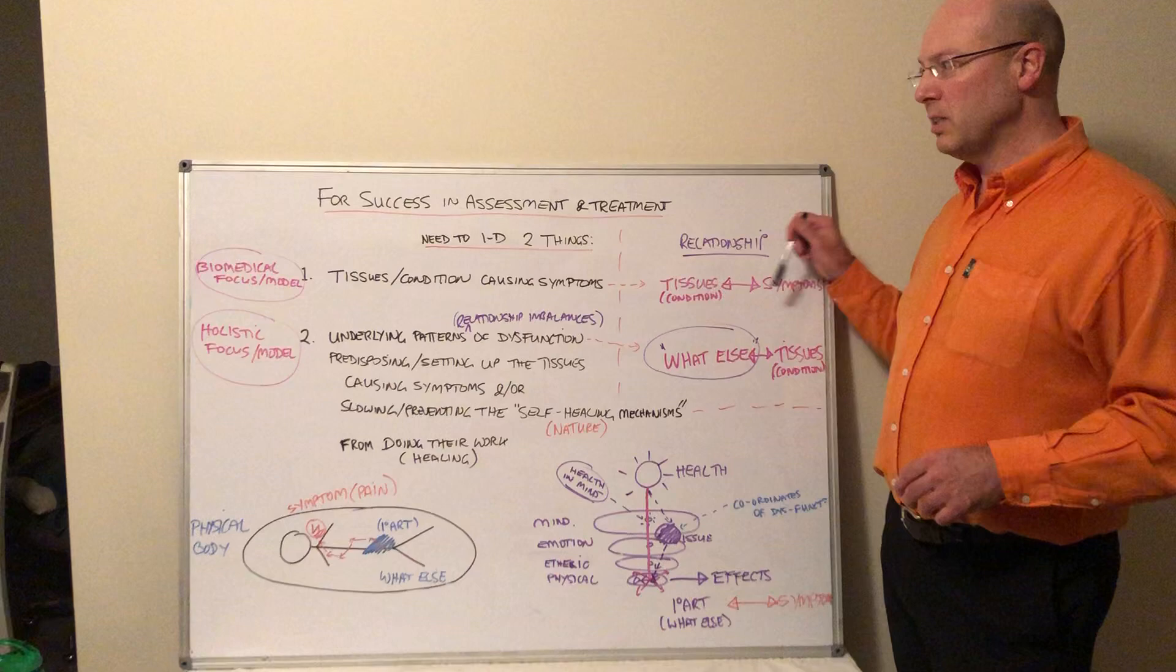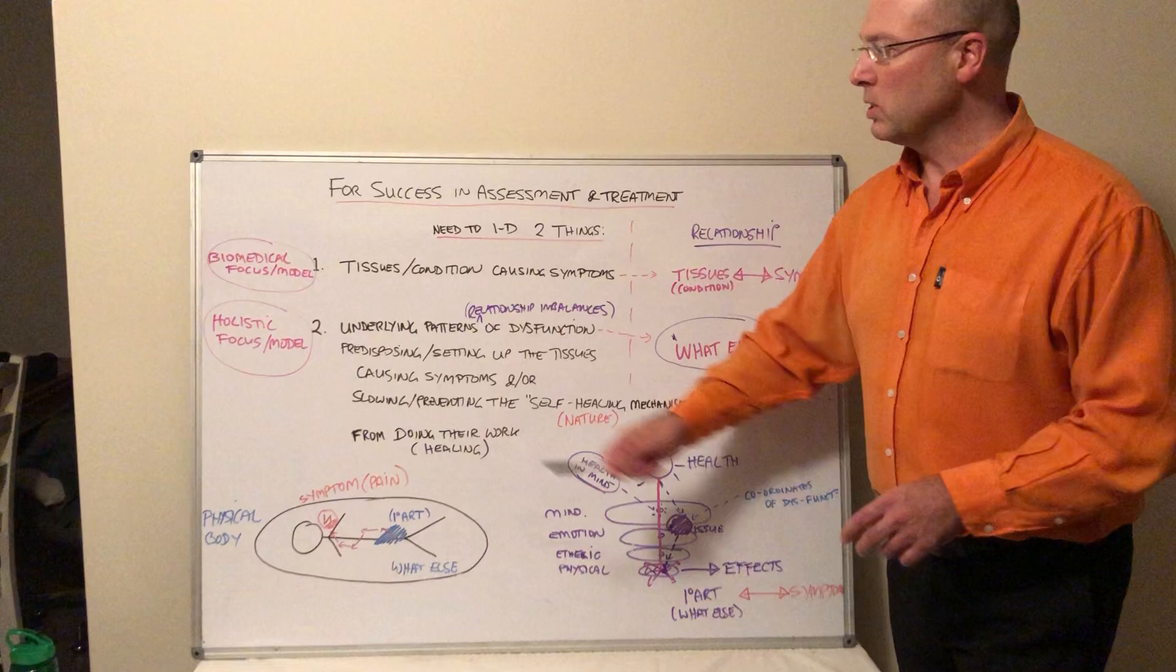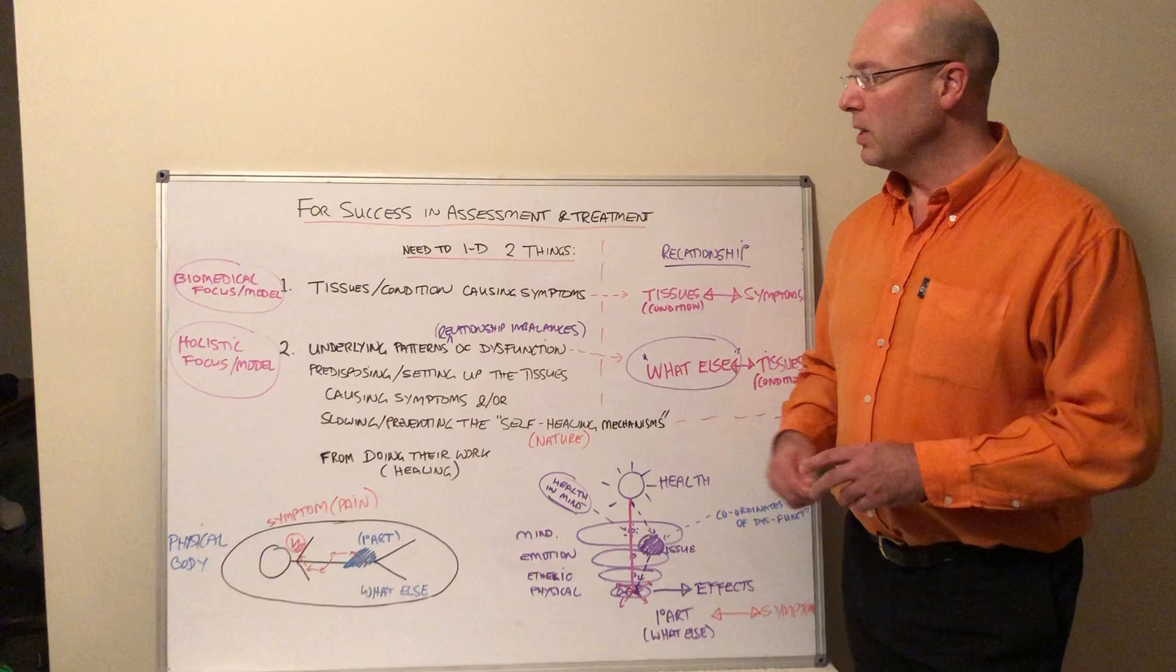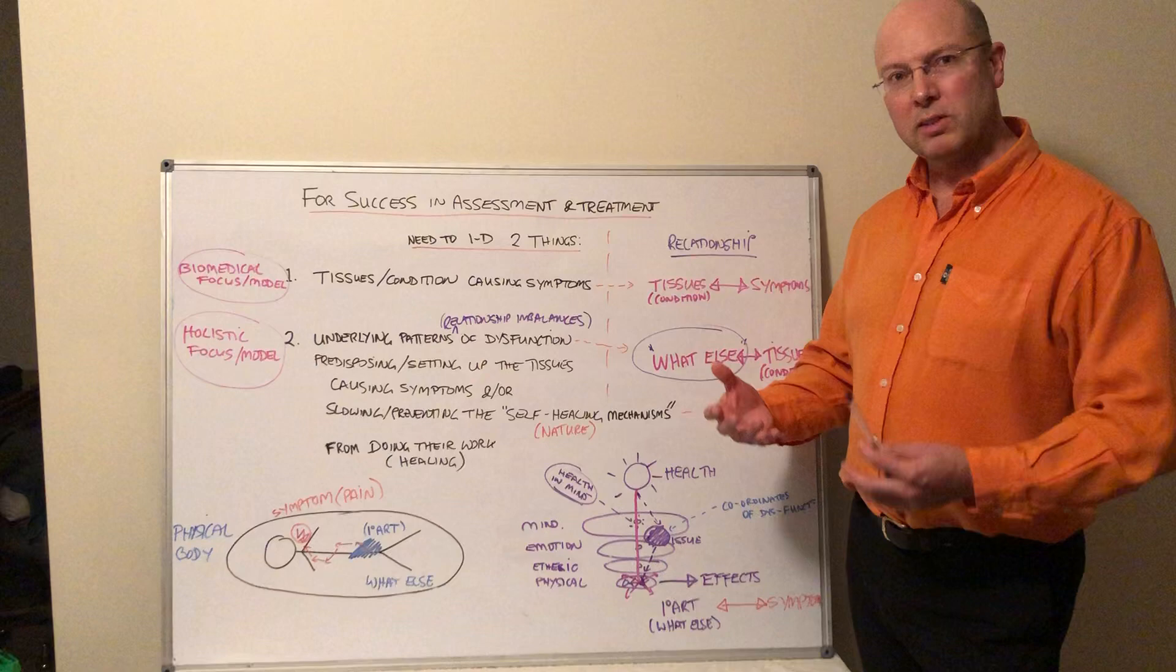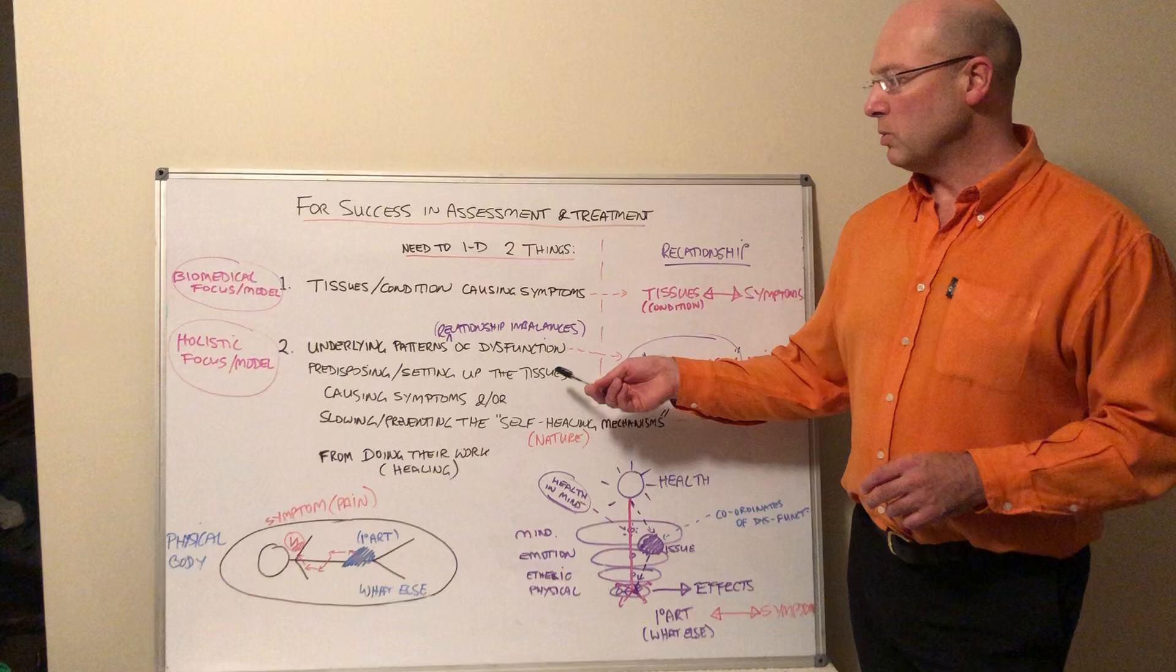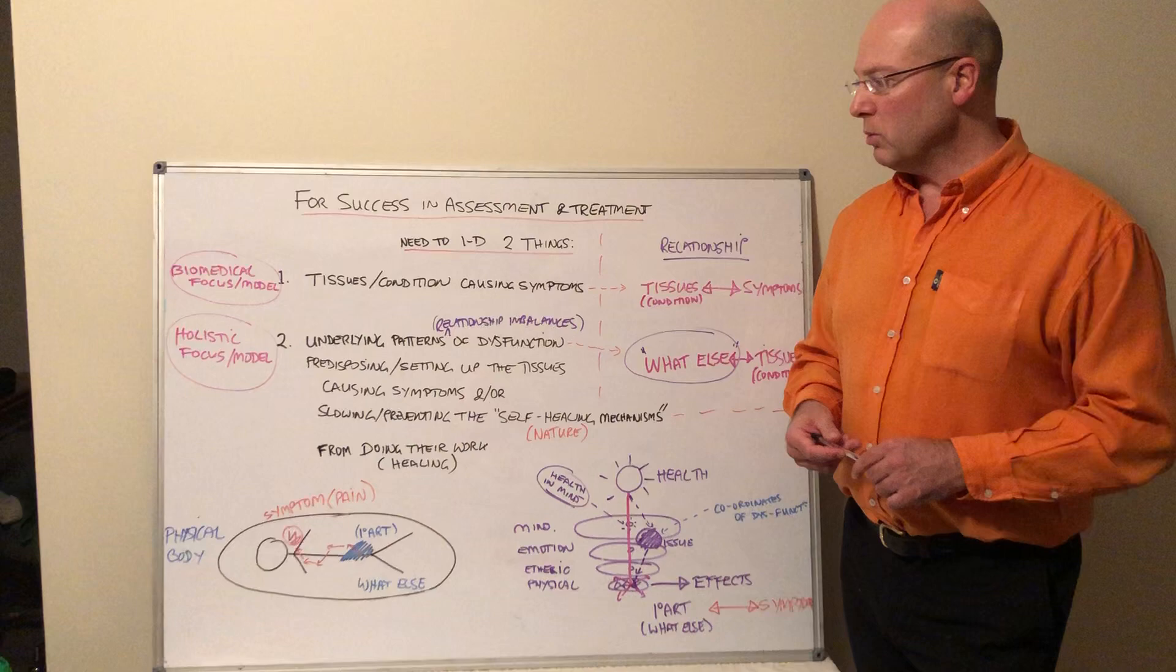That helps you understand what's causing your immediate problem, but the other relationship you want to look for is the underlying patterns of dysfunction, which I've called relationship imbalances, that are predisposing or setting up the tissues causing symptoms. In other words, they're setting the stage for the manifestation of that condition or those symptoms, or slowing or preventing the self-healing mechanisms from doing their work effectively.